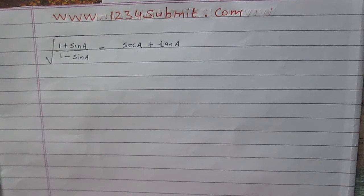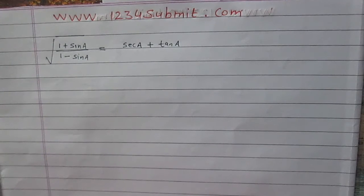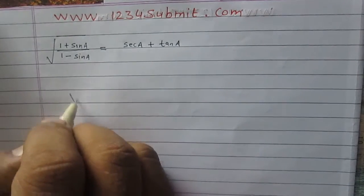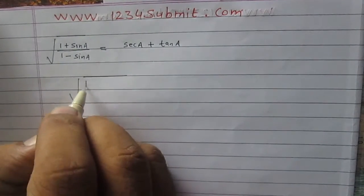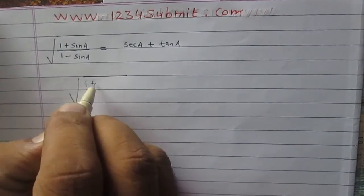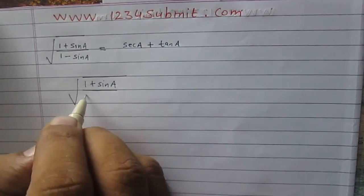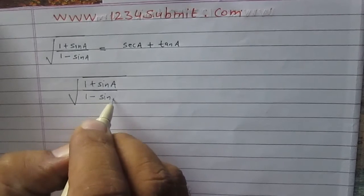Prove that square root of the ratio (1 plus sin a) divided by (1 minus sin a) is equal to sec a plus tan a. Let us consider the left hand side: square root of (1 plus sin a) divided by (1 minus sin a).